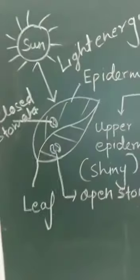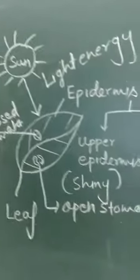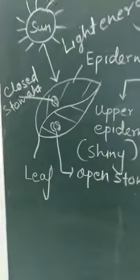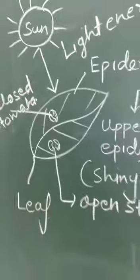They are trapping the sunlight. I have drawn a sun that is giving light energy. The leaves first trap the light energy, and you can see the picture shows closed stomata and open stomata.